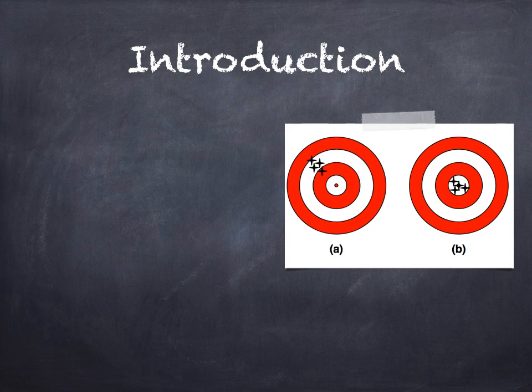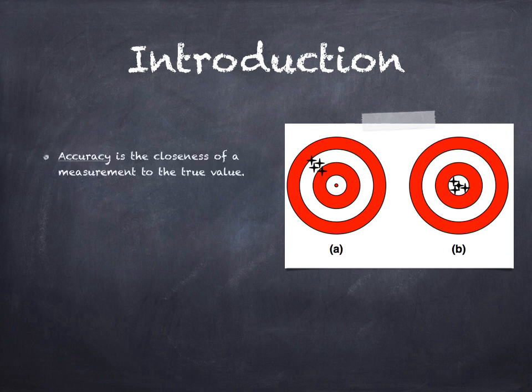You've probably talked about accuracy and precision in lecture, but we'll review here. Let's define accuracy and precision and discuss how we'll assess them in this experiment. Accuracy is how close a measurement is to the true or accepted value.